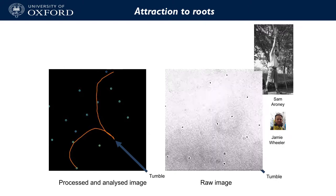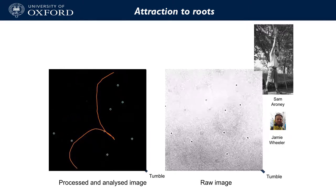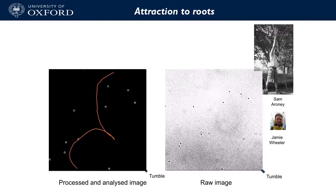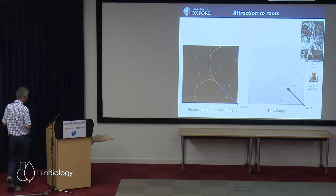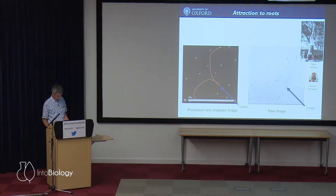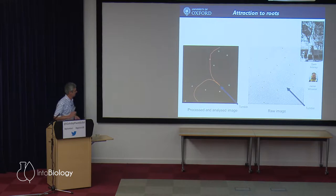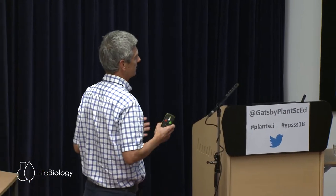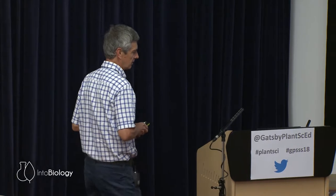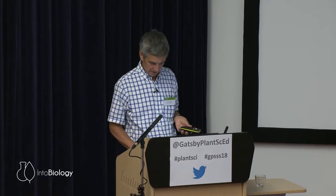Here you can see a single cell doing complete turns — coming in, reversing, and coming around again. The bacteria actually do these remarkable runs and then reverse direction. Clearly the bacteria have to be able to modify their swimming when they see gradients to get onto the plant root. A lot of what Sam is doing is trying to understand the genetics of how bacteria swim to roots and how plants attract them in the first place.